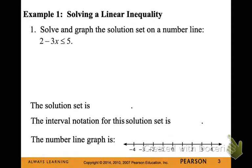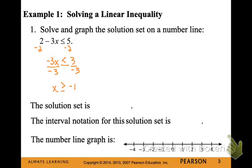So let's start with a linear inequality. Let's solve and then graph on a number line this inequality. We're also going to write our solution in set notation and interval notation. So we need to isolate the variable x, so let's start by subtracting 2 from both sides. Now let's divide by negative 3. When we do that, we need to switch our inequality sign. So our solution is x is greater than or equal to negative 1.